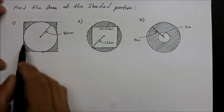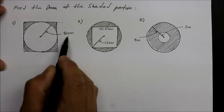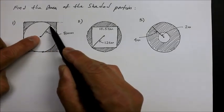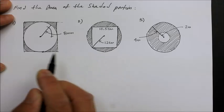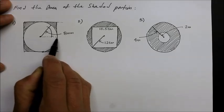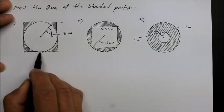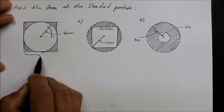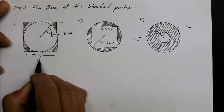So number one: we have a square and a circle, and the radius given is 8 millimeters. If I rotate the circle so it goes perfectly across, you can see that 8 millimeters reaches from the center to the edge of the square. That means the full distance across — the diameter of that circle — is double 8, so it's 16 millimeters.